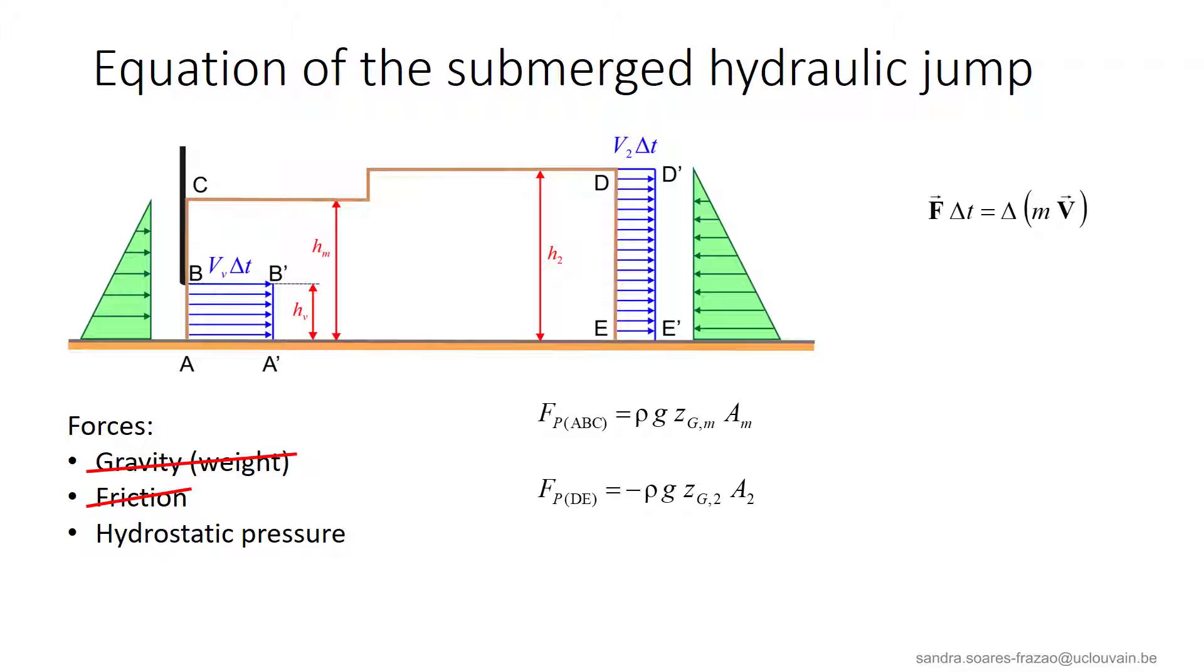On the upstream side, according to our assumptions, we have a hydrostatic pressure distribution over AB due to the parallel flow assumption and BC due to the assumption of water almost at rest.